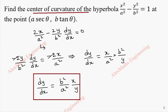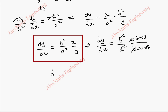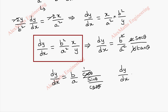Now we are going to use the point (a secθ, b tanθ). So dy/dx = (b² / a²) · (a secθ) / (b tanθ). We get dy/dx = (b/a) · secθ, which can be written as 1/cosθ divided by sinθ/cosθ, so after cancelling we get dy/dx = (b/a) sinθ. We keep this separately.